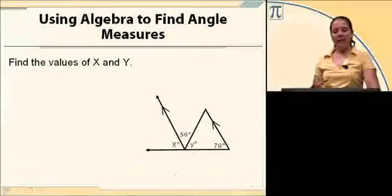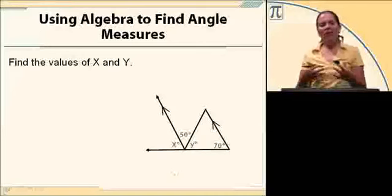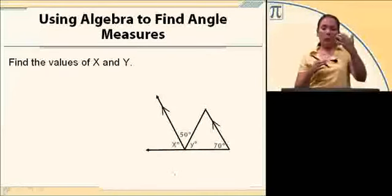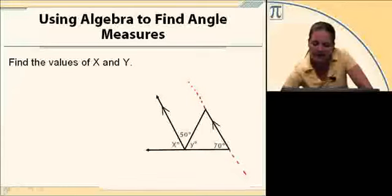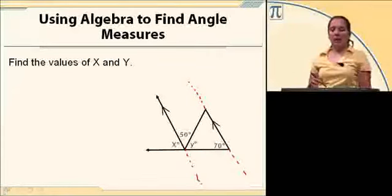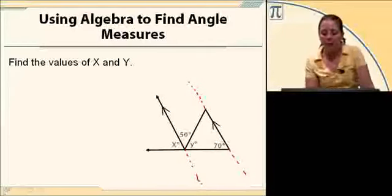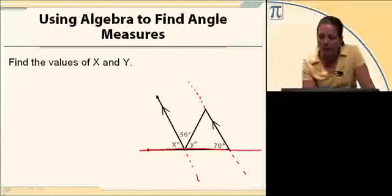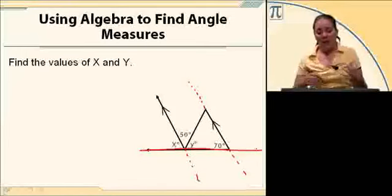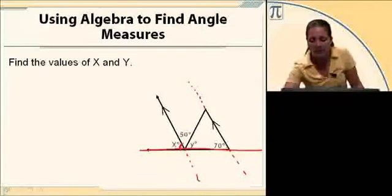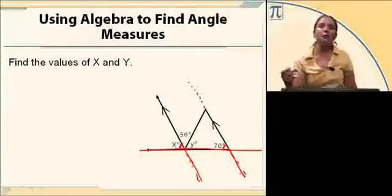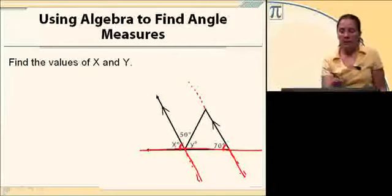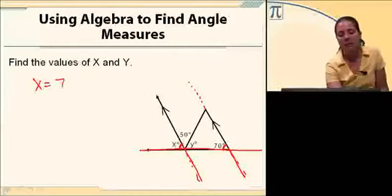We're going to find the values of x and y. When I'm given a picture like this, I've got parallel lines in there. There's nothing wrong with taking a straight edge and just extending these out so we can better see what my corresponding angles are. So the point of that was to help me see that x and this 70 are corresponding angles. It's not as clear when those lines cut off too short. If they're corresponding angles, then x must be 70.